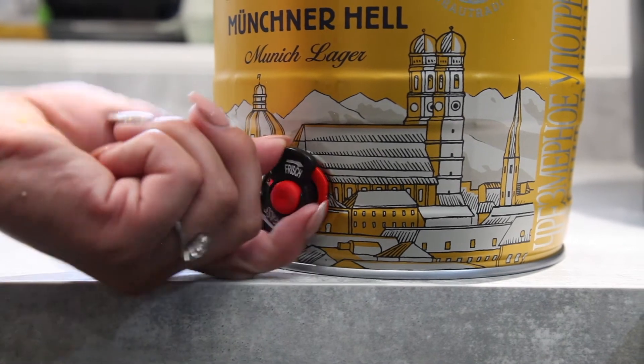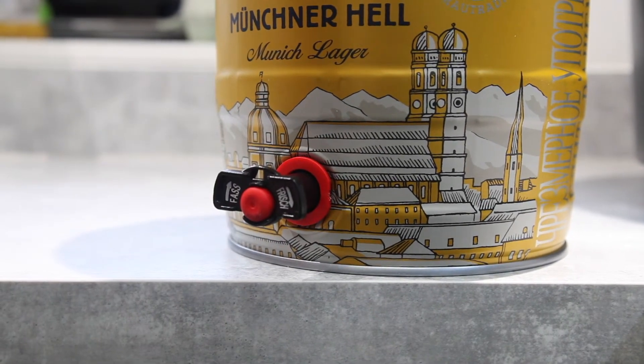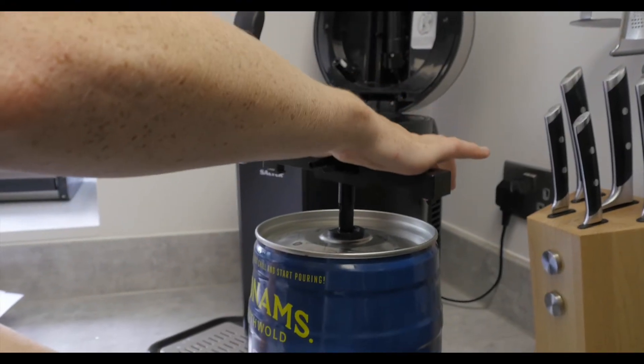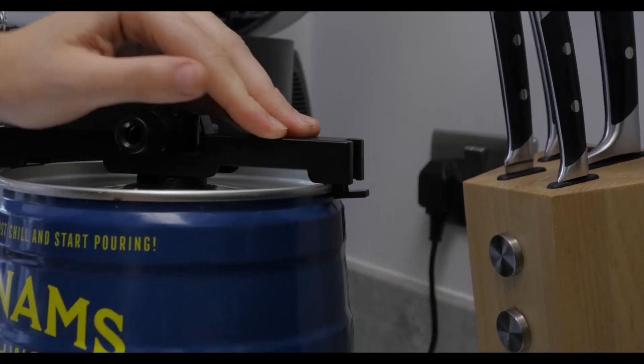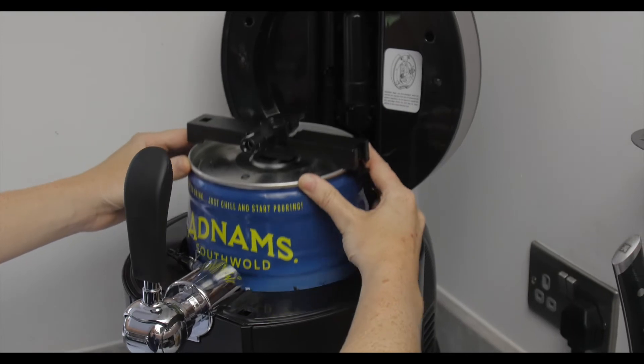Follow instructions on your keg to vent the gas. Once the keg has been vented, pierce and push the keg pacing tube into the top of the keg until the mount clips onto the sides of the keg.